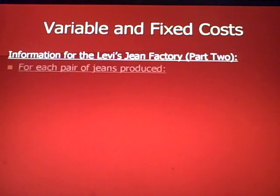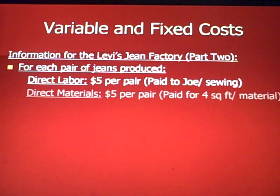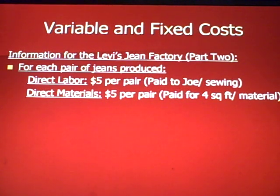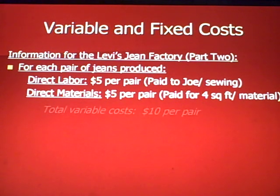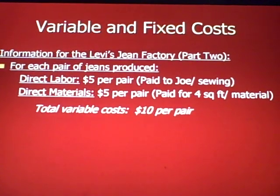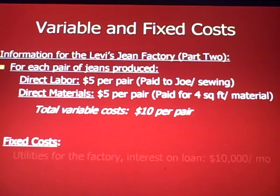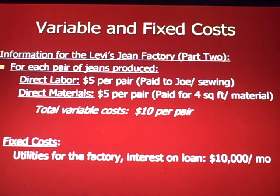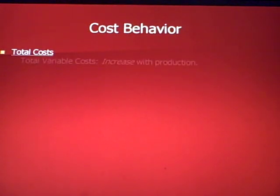From that discussion, we had costs for each pair of jeans: direct labor of $5 per pair paid to Joe to sew the pants, and direct material cost of $5 a pair for four square feet of material — so total variable cost of $10 a pair. We also have fixed costs for utilities and interest on a loan totaling $10,000 a month. Our new piece of information is cost behavior.